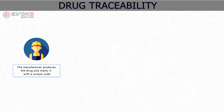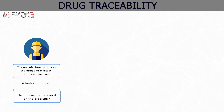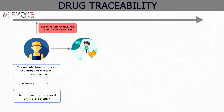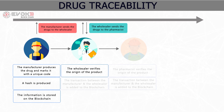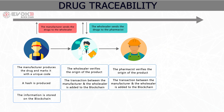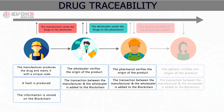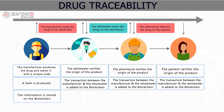Drug traceability — blockchain can also be used in drug traceability. The manufacturer sends drugs to the wholesaler; the information is stored on the blockchain and a hash is produced. The wholesaler verifies the origin of the product and this transaction is stored on the blockchain. The wholesaler then sends the drugs to the pharmacist, who also verifies the origin. All transactions are stored on the blockchain, allowing drugs to be traced effectively.